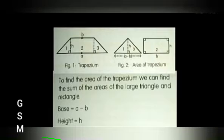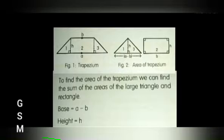To find the area of the trapezium, we can find the sum of the areas of the large triangle and rectangle. The base of the triangle is equal to a minus b, and the height is equal to height.